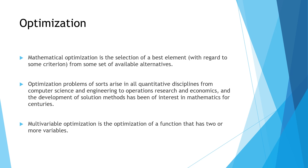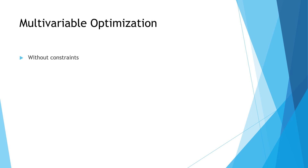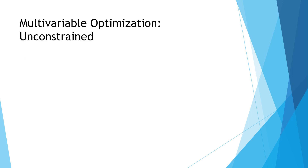Multivariable optimization is the optimization of a function that has two or more variables. We saw single variable optimization in which functions were defined in one single variable like x. Multivariable optimization on the other hand will have two or more variables — x, y, z, and so on. There are two types of multivariable optimizations we are going to study: one is without constraints, and one is with constraints.